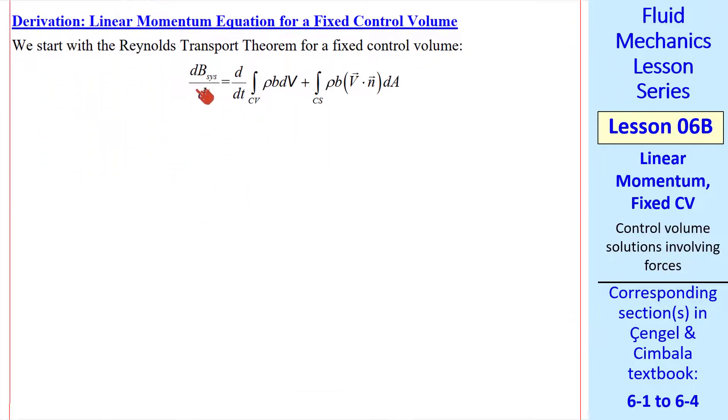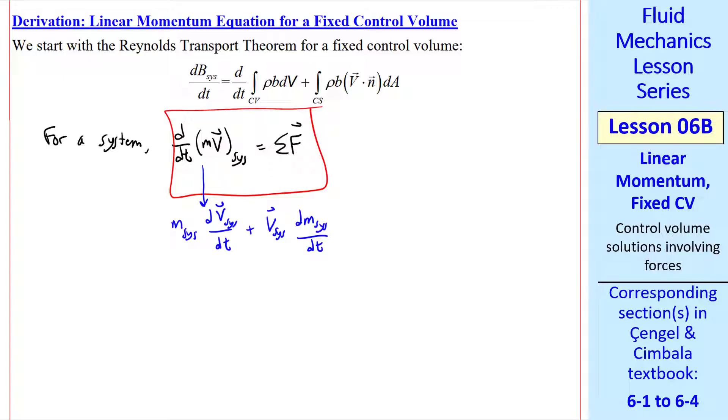First the derivation. We start with the Reynolds transport theorem for a fixed control volume. For a system we write d/dt of mv of the system equals sigma f acting on the system, where mv is the linear momentum of the system, and sigma f represents all the forces acting on the system. As an aside, differentiate by parts, we get these two terms. This one's identically zero, since the mass of a system cannot change by definition. So m dv/dt equal f is our familiar Newton's second law, since this is acceleration.